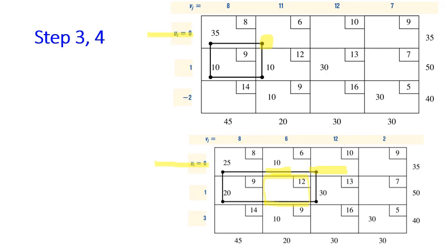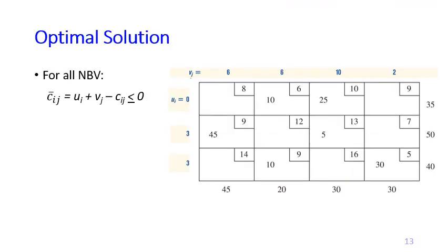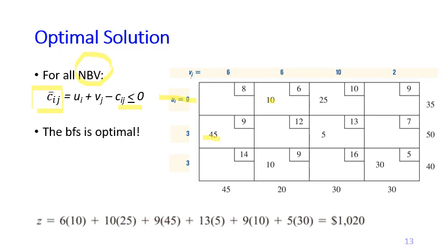Now for this BFS, make sure that again, same as before, you calculate all the u's and the v using all the basic variables. Then check for all non-basic variables whether all the c hat ij is already less than or equal to zero. In this case, all non-basic variables already have got the cij hat less than or equal to zero. It means that this BFS is already optimal.